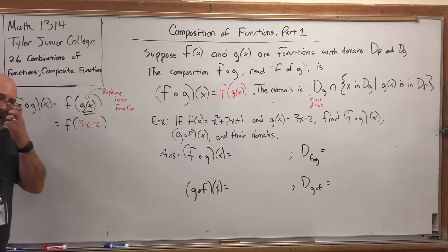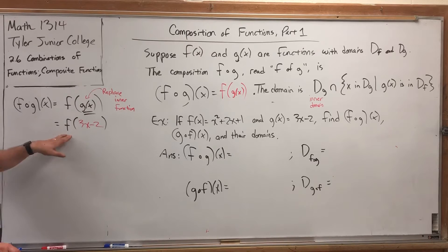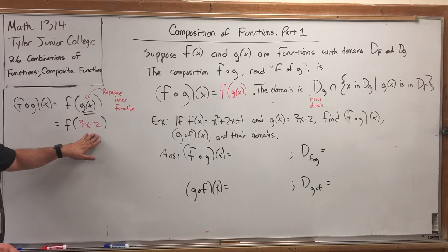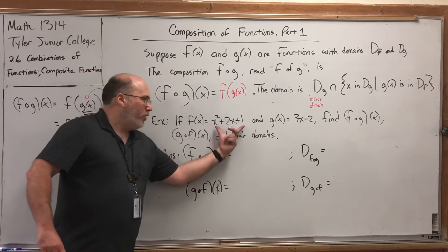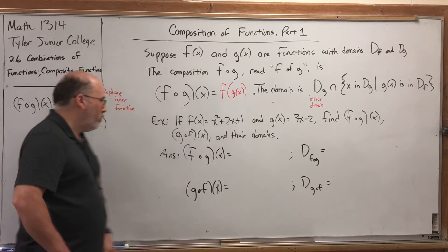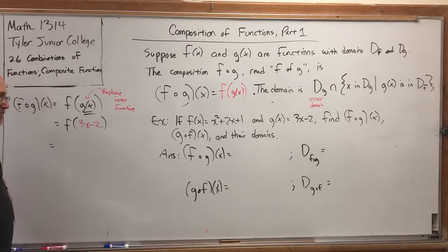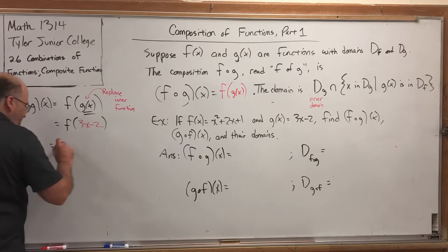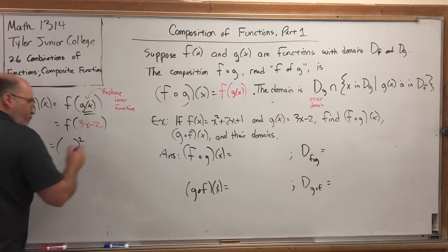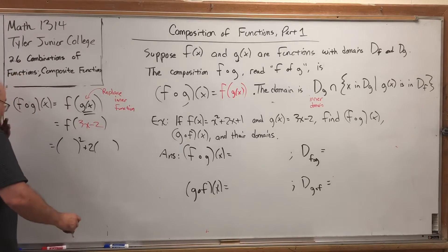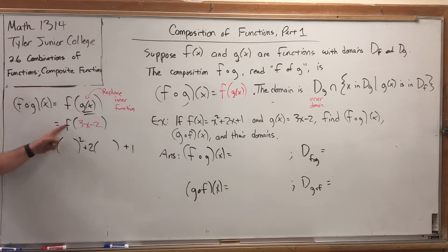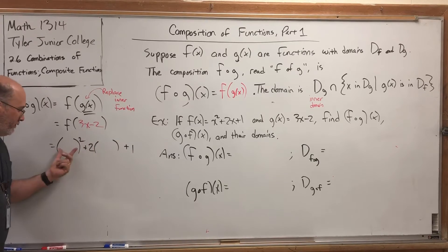Now, we're in the same position we were back in section 2.1, where we evaluated a function at an expression. Just a reminder, a safe way to always set it up is to write the outer function, but replace each x with parentheses. So, I'm going to write x² + 2x + 1. But every time I'm about to write an x, I'm going to write an empty set of parentheses. So, parentheses squared, plus 2 parentheses, plus 1. This is what the outer function does. This is what it's doing it to. Fill in the parentheses.